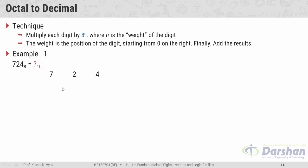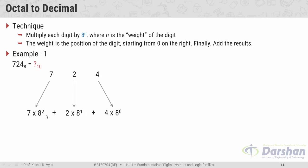Writing 724 with spacing: the digit position of 4 is 0, digit position of 2 is 1, and digit position of 7 is 2. We multiply 4 by 8 raised to 0, 2 by 8 raised to 1, and 7 by 8 raised to 2, where 8 is the base of the octal system. Performing the mathematical operations gives 468 as our answer.